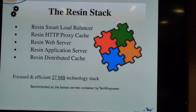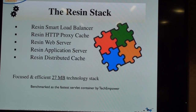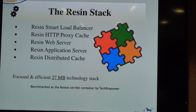The Resin stack includes a smart load balancer, HTTP proxy cache, web server, app server, and distributed cache — all coming in at 27 megabytes. The actual memory footprint of Resin is very low. It doesn't seem like a huge point for many deployments, but for clusters of hundreds of servers it starts to make a real difference in the hardware they have to purchase.